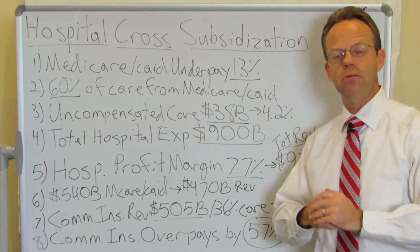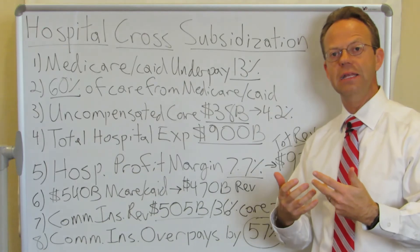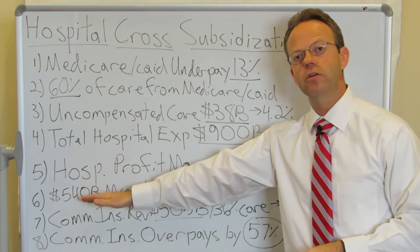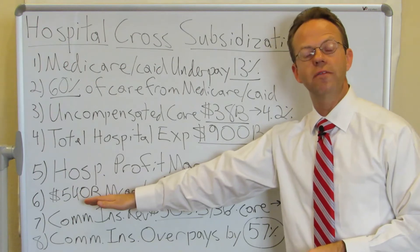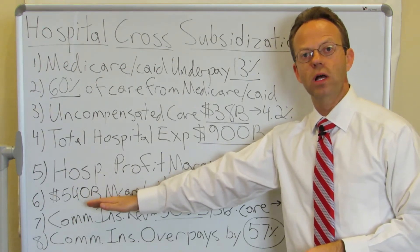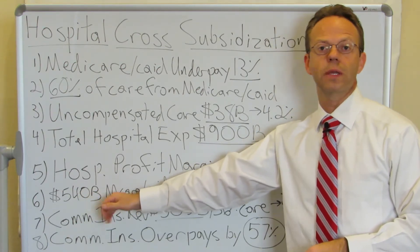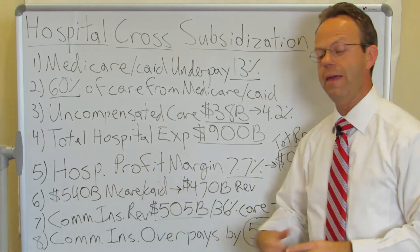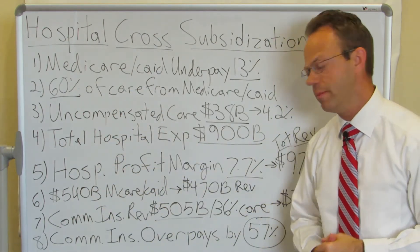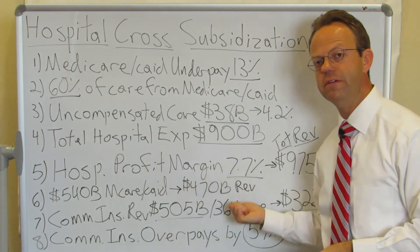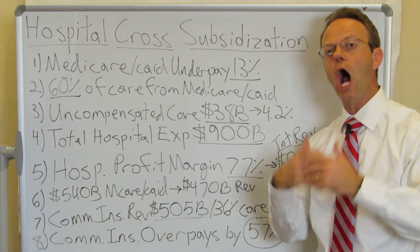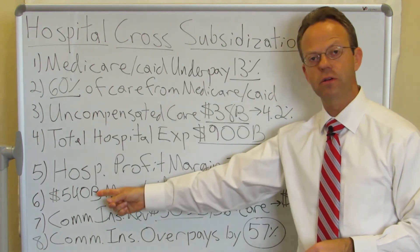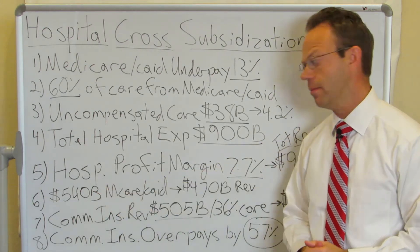Now let's break it down by Medicare and Medicaid in terms of specific dollar amounts. That means $540 billion of hospital care was from Medicare and Medicaid. But hospital revenue from Medicare and Medicaid was only $470 billion, because Medicare and Medicaid undercompensate for the care. So they only paid $470 billion for the $540 billion of care that was provided for them.